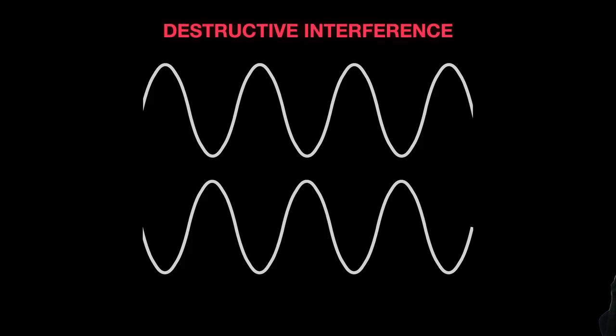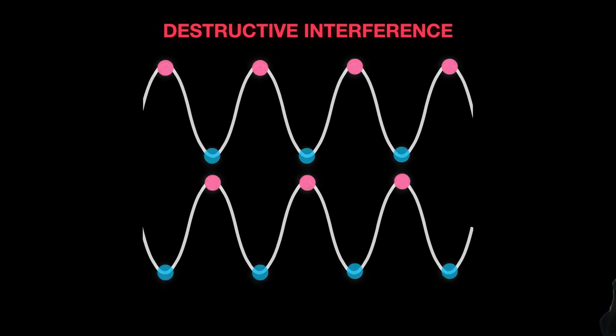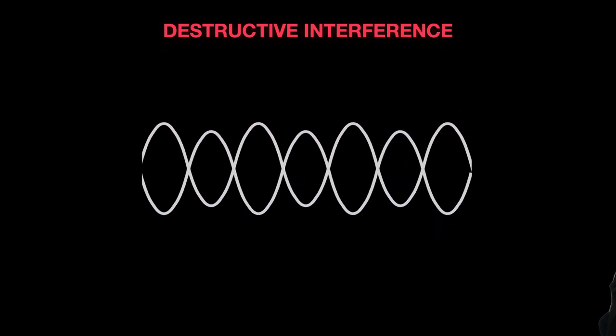On the other hand destructive interference occurs when the peaks of one wave align with the troughs of the other or vice versa. The amplitudes of the waves will cancel out meaning we will not see that color in that section of the soap bubble.